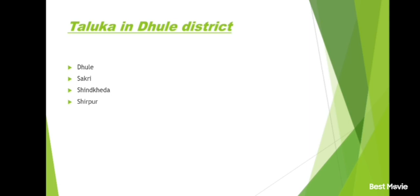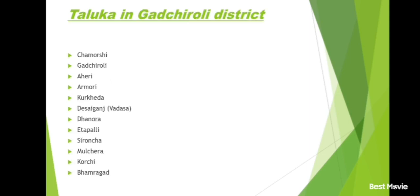Chandrapur district and its talukas: Chandrapur, Warora, Chimur, Nagbhid, Brahmapuri, Saoli, Sindewahi, Bhadravati, Mul, Pombhurna, Ballarpur, Korpana, Rajura, Gonpipri and Jivati.